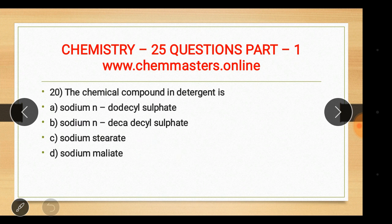Question twenty: the chemical compound used in detergent is sodium N-dodecyl sulfate. The other options were sodium stearate and sodium oleate.